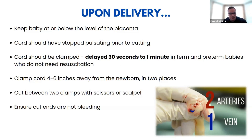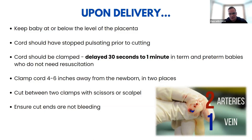Clamp the cord four to six inches away from the newborn in two places — the first clamp four inches from the newborn, the second six inches away — giving a two-inch section to cut between. Cut between the two clamps with scissors or a scalpel. Make sure the ends are not bleeding; they shouldn't be if clamped. If they are bleeding, don't remove the clamp — just add another one, as it acts like a tourniquet.